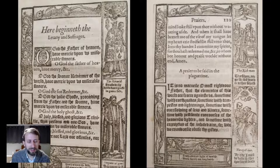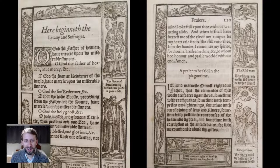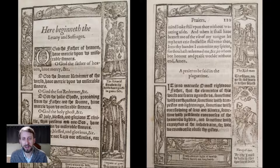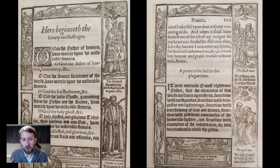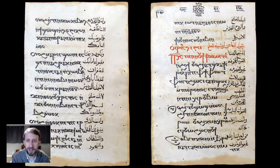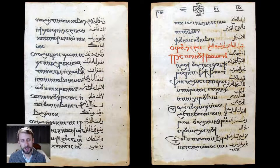This Elizabethan prayer book also has wonderful woodcut illustrations in the borders showing the dance of death — a morbid series showing all different members of Elizabethan society, from the rich and powerful to the poorest of the poor, being led off to their graves by a grinning skeleton representing death. The message being: no matter who you are, we're all mortal. Put your trust in your savior and hope for eternal life. Now I want to move to the Eastern churches briefly. We don't have nearly as much in our collection relating to the Eastern Christian churches, but I wanted to show you a few examples.